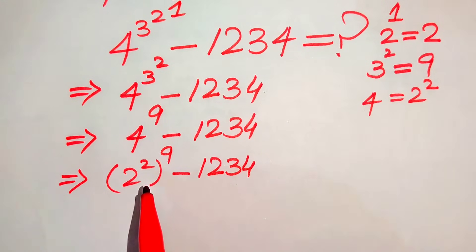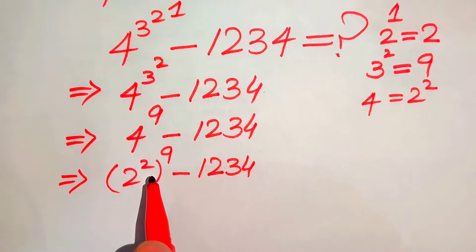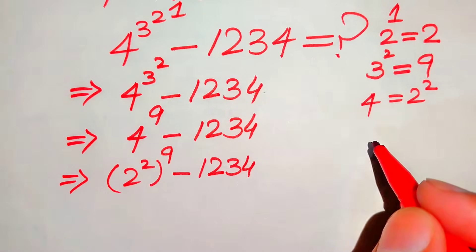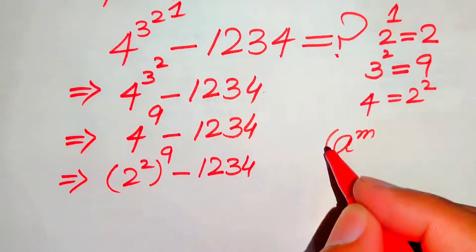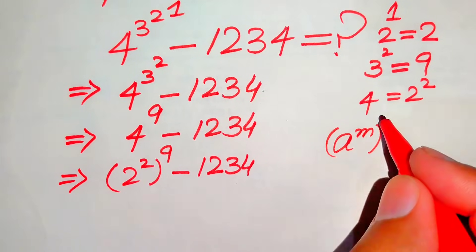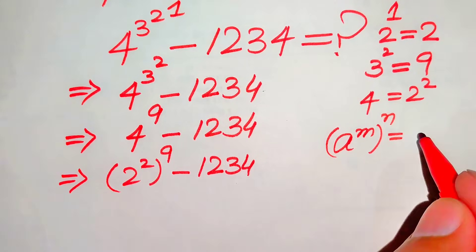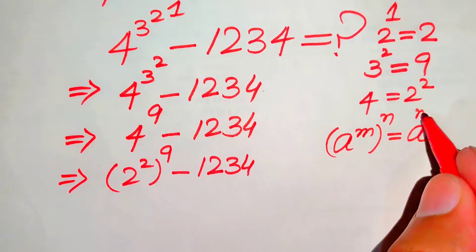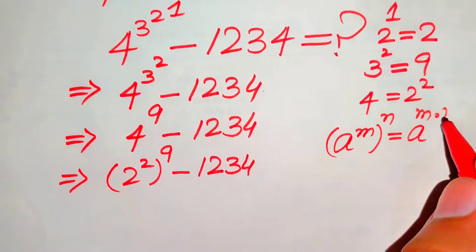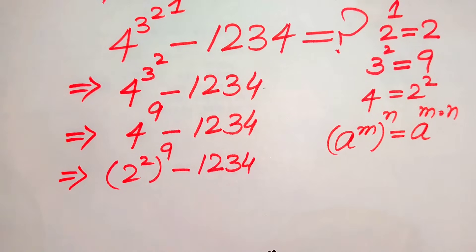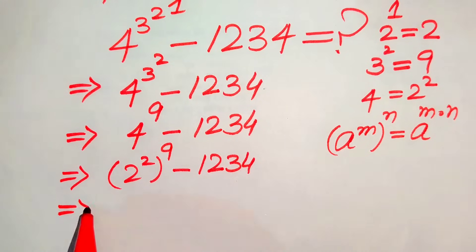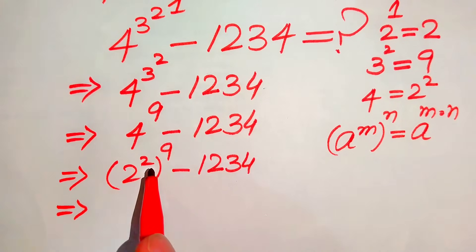We now have exponent to the exponent, and we can apply the exponent law: if we have a to the power of m to the power of n, it equals a to the power of m multiplied by n. Multiplying the two exponents, the expression becomes 2 to the power of 2 times 9, which gives 18, minus 1234.